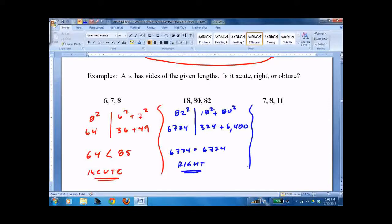Try the last one on your own. When you're done, you should get 121 is greater than 113, which makes it obtuse.